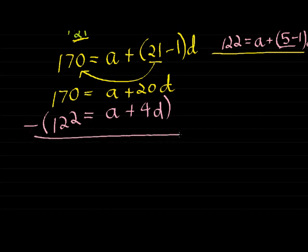And therefore I get 170 minus 122 is... A minus A is zero. Therefore, I have dealt with one of the unknowns. It's gone. And then 20 minus 4 is... so this is zero A, or just zero then. And 20... Remember, I'm subtracting this whole thing, so it's 16d.